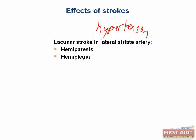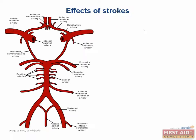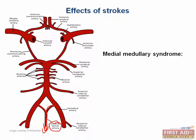Now we'll move on to the posterior circulation, where we encounter the medial and lateral medullary syndromes. The medial medullary syndrome is caused by a lesion in the anterior spinal artery. Infarction of the ACA affects the corticospinal tracts before they decussate in the medullary pyramids. It also affects the medial lemniscus as it travels from the spinal cord to the thalamus. Lastly, it affects cranial nerve 12.